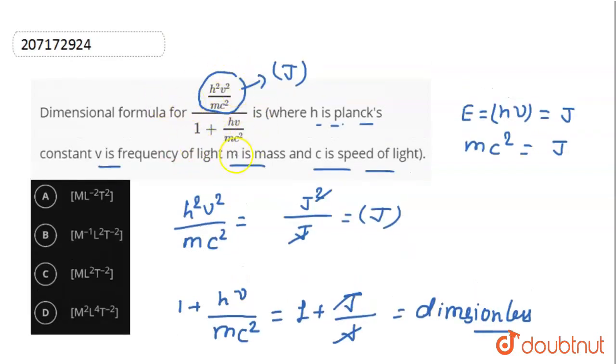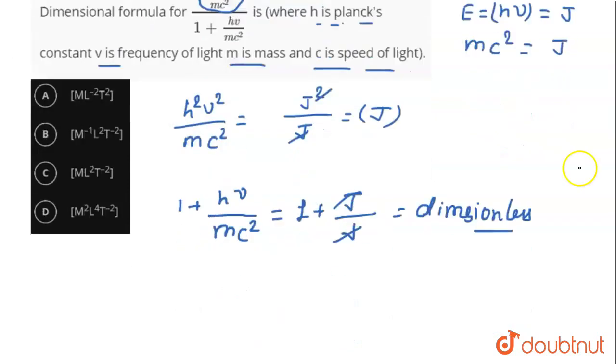Suppose the total term is K. So K's unit will be what we got on top, which is joule, the energy unit. And what we got on the bottom is a dimensionless formula. So if it's joule divided by dimensionless, the final unit is joule.